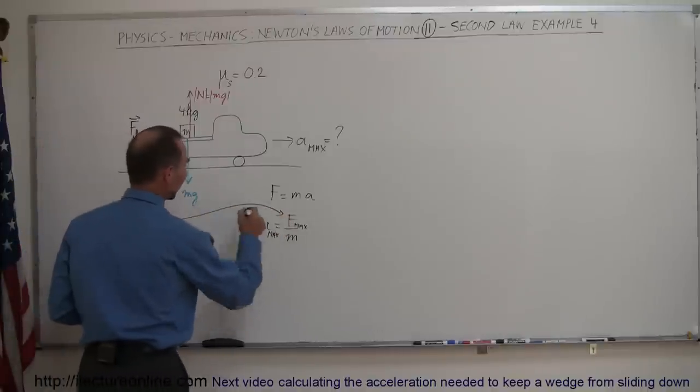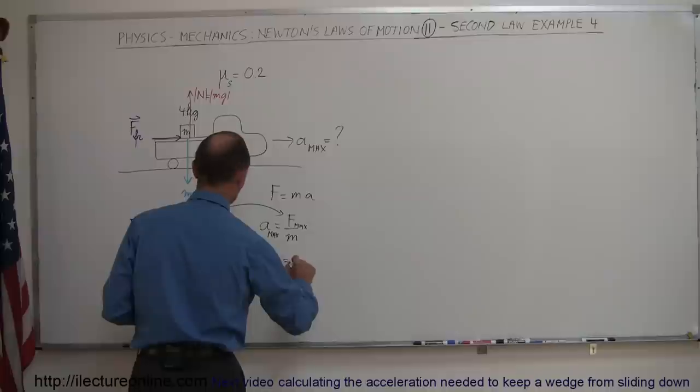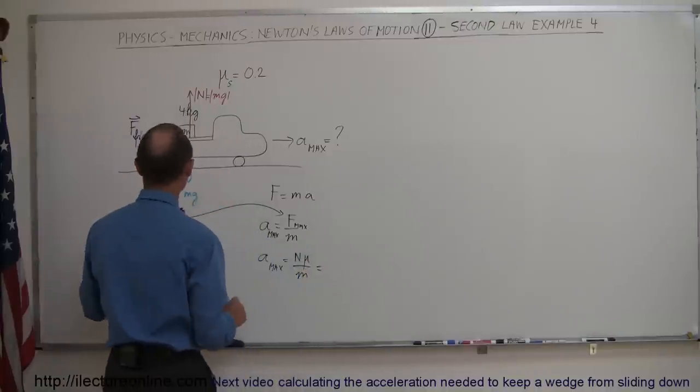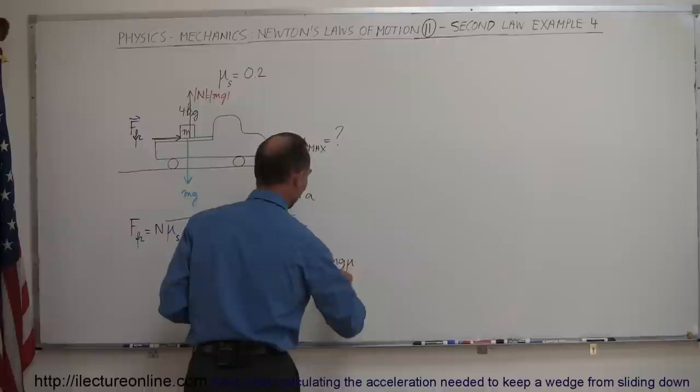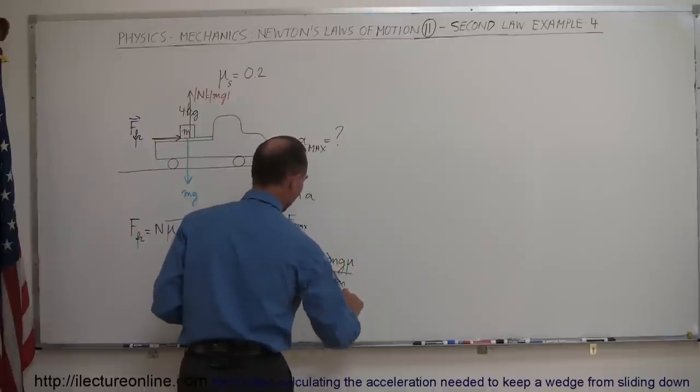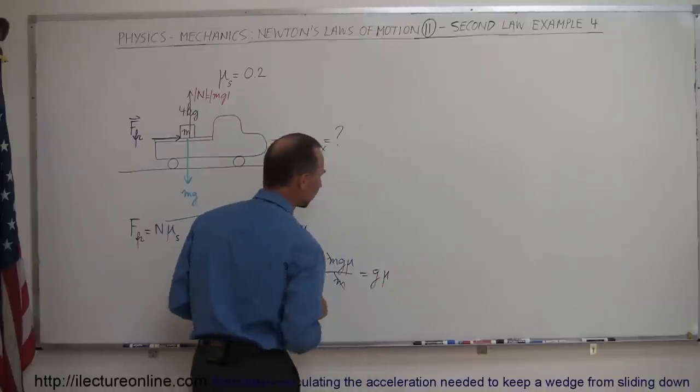So acceleration max is equal to the normal force times mu divided by the mass, and the normal force is mg, so that would be mg mu divided by the mass, and the mass cancels out. So the maximum acceleration would be g times mu.